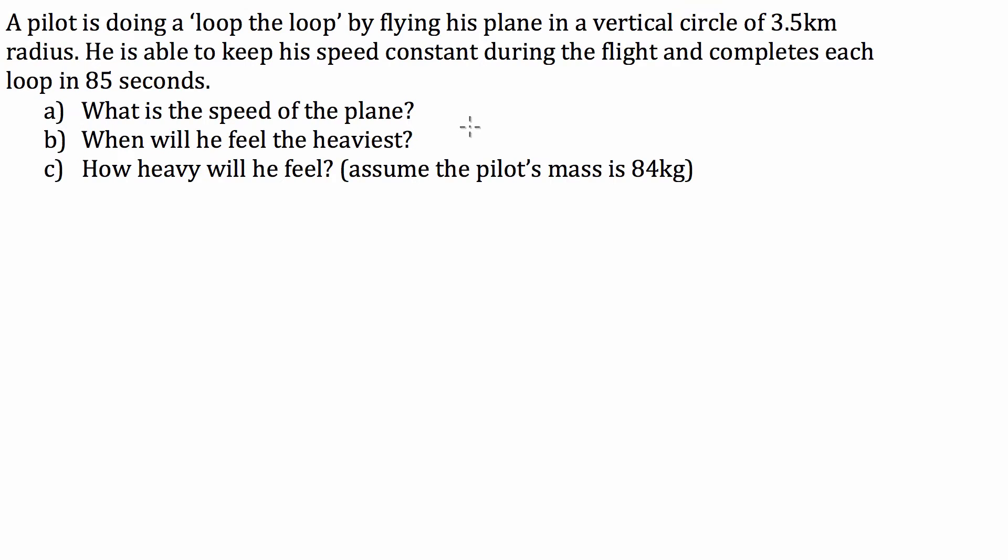Okay, we've been given a circular motion question here where we've got a pilot that's flying his plane in a vertical loop-to-loop of radius 3.5 kilometers, and he's able to complete the loop by flying at a constant speed in 85 seconds. So the first question they ask us is, what is the speed of the plane?